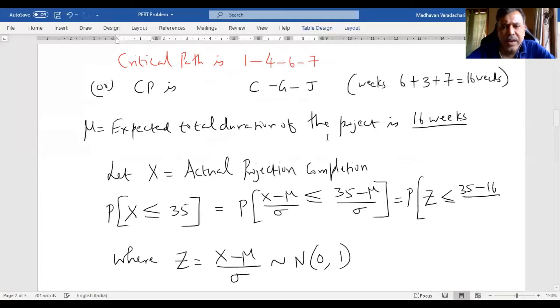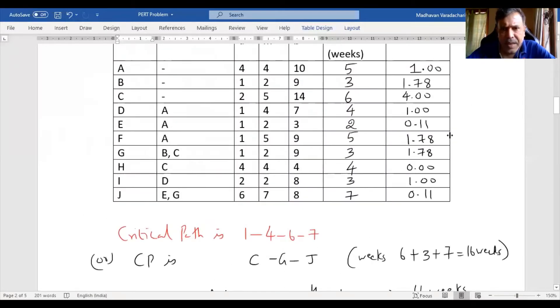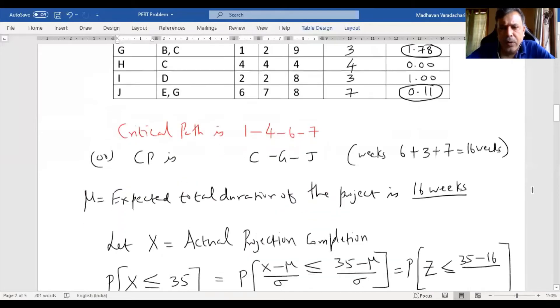How do we find standard deviation? For that we need to identify what is the critical path. It is C, G and J. C, what is the variance? It is 4. G, what is the variance? It is 1.78. J, what is the variance? It is 0.11. So we will add all those.